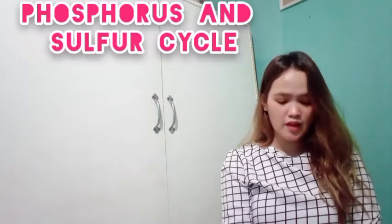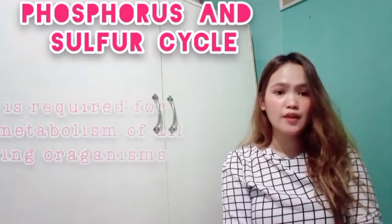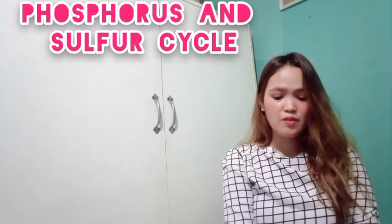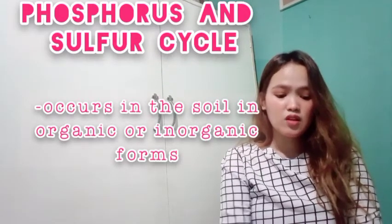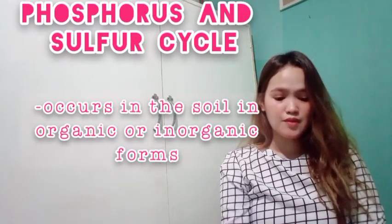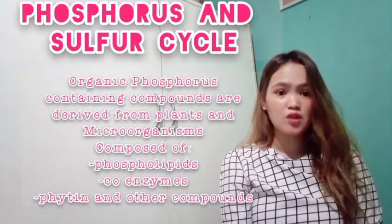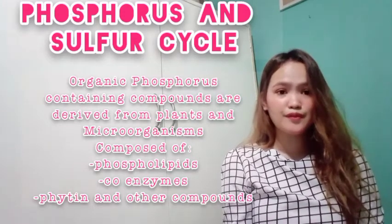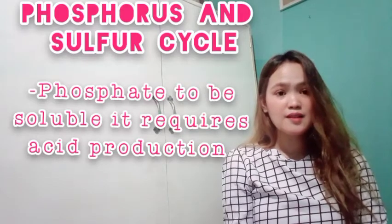Now let's proceed to the phosphorus and sulfur cycles. Phosphorus is an important constituent of protoplasm and is required for the metabolism of all living organisms. Though it is found in the soil, its major storehouse is in rock deposits. Agricultural crops contain only about 0.50% of phosphorus in their tissues in the form of several compounds. This phosphorus occurs in the soil in both organic and inorganic forms. Organic phosphorus-containing compounds are derived from plants and microorganisms, and are composed of phospholipids, coenzymes, phytate, and other compounds. In soil, about 15–85% of total phosphorus is organic, which is unavailable for plants unless microbes convert it into an inorganic soluble form.